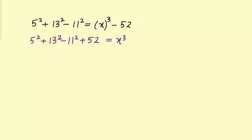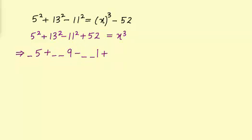Now what we need to do here is to calculate the unit digit for each and every term. Square of 5 is 25, so its unit digit is 5. Plus, square of 13 is 169 and its unit digit is 9. Minus, square of 11 is 121 and its unit digit is 1. Plus, unit digit of 52 is 2.